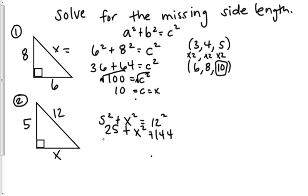And then, I want to subtract 25 from both sides. So, x squared is equal to 119. Once again, that is not my answer. To get my answer, I have to take the square root of both sides.